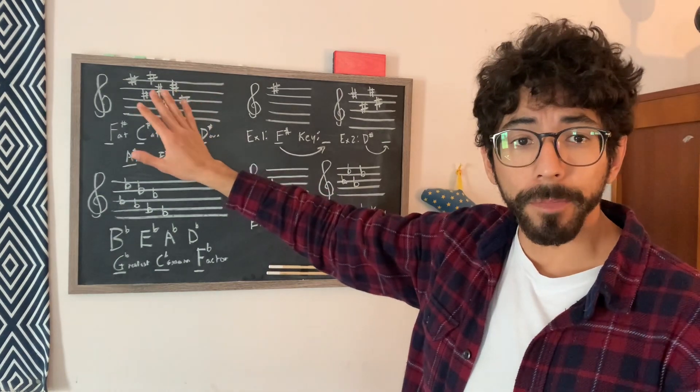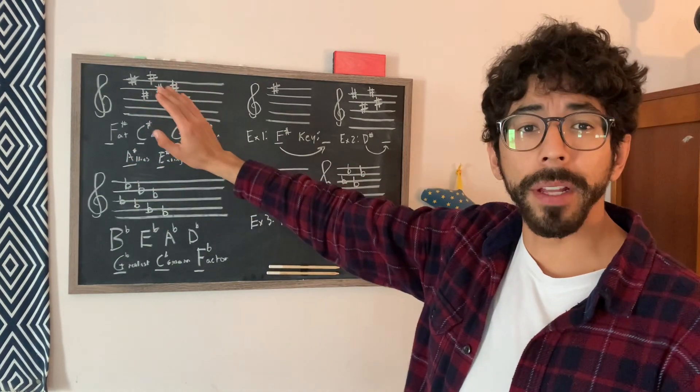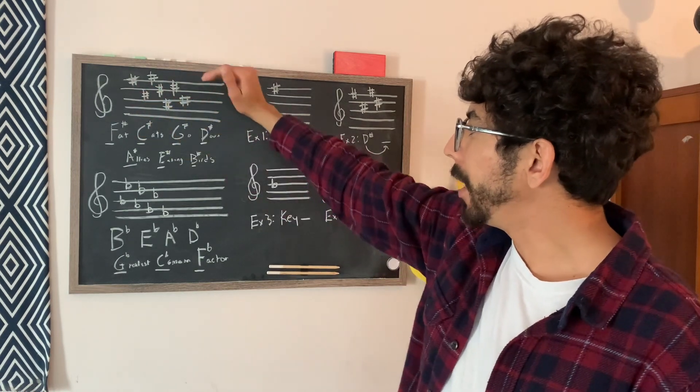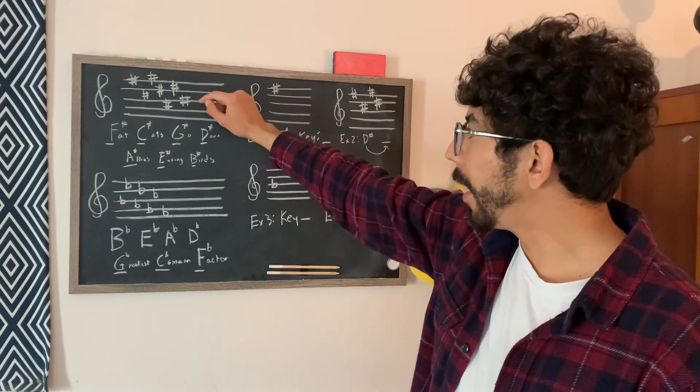So let's break it down a little bit. If we're looking at sharps, it's always going to be in the same order. We're going to write it from F, C, G, D, A, E, and then B.